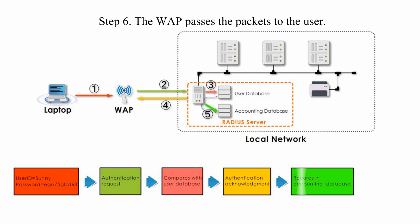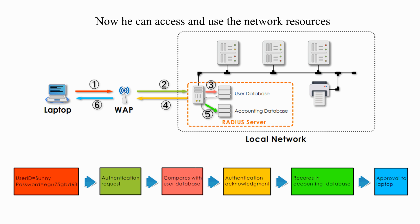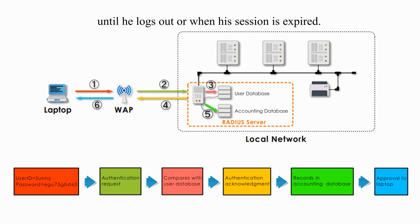Step 6: The WAP passes the packet to the user. Now he can access and use network resources until he logs out or when his session is expired.